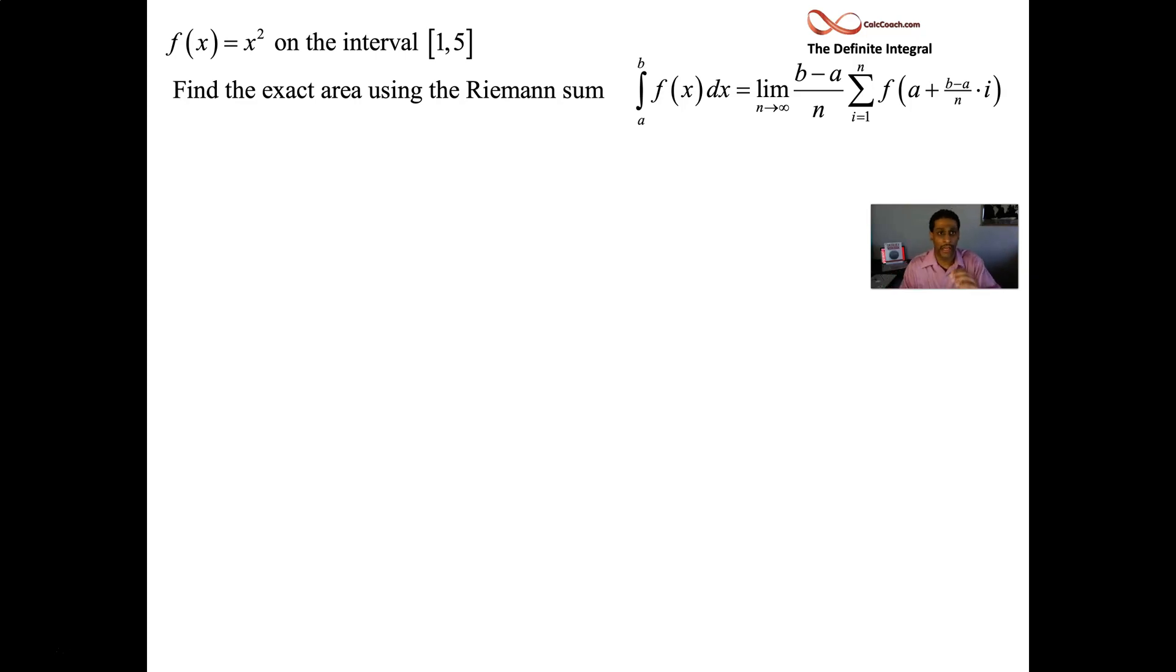From the previous slide, we have our formula. Now let's evaluate it. Who's a? Who's b? a is one, b is five. Five minus one is four. Outside our summation, we have four over n. Inside, we have f evaluated at a, which is one, plus i delta x, and delta x is four over n. We have the integral symbol, and now the limit represented by the definition, the Riemann sum, and we are going to evaluate this limit.